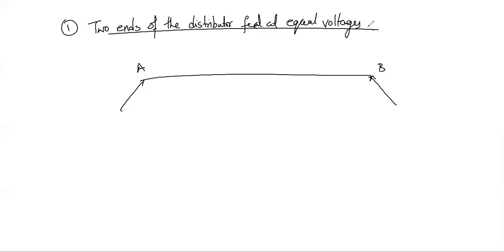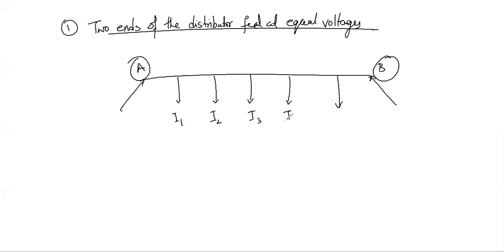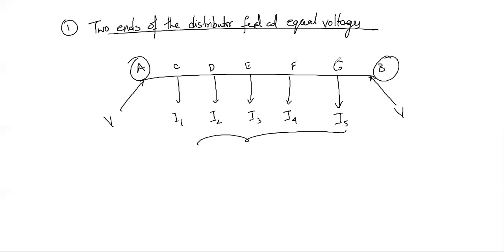Consider distributor A and B with equal level of voltages say V volts, having concentrated loads with currents I1, I2, I3, I4, and I5. The loading points are C, D, E, F, and G, where currents I1 through I5 are drawn respectively. As we move away from feeding point A, the potential difference goes on decreasing.